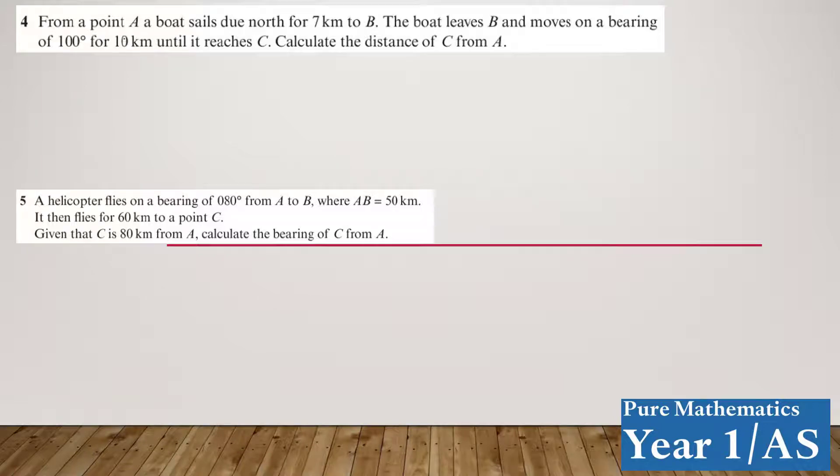Right, so from a point A, a boat sails due north for 7 km to B. So here's the point A, always draw a diagram. That is due north to point B, and that's 7 km.